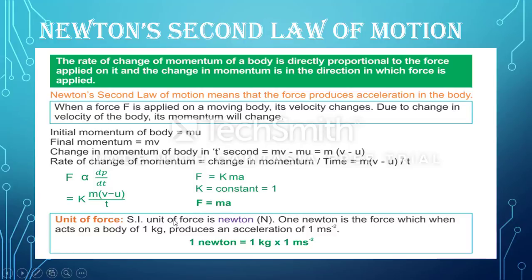The unit of force is Newton in the SI system. One Newton is the force which, when acted upon a body of one kilogram, produces an acceleration of one meter per second squared. There is also a smaller unit of force called the dyne, used in the CGS system. We will learn the relation between Newton and dyne — how much one Newton equals in dynes — in the next video.